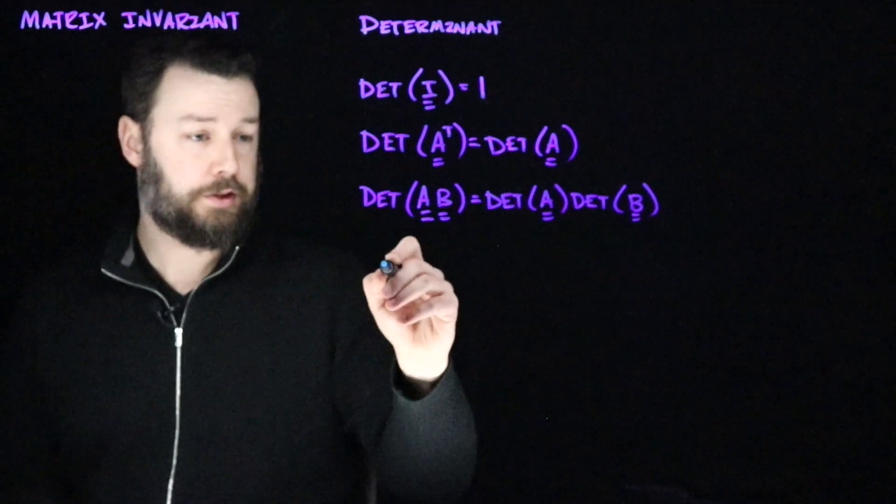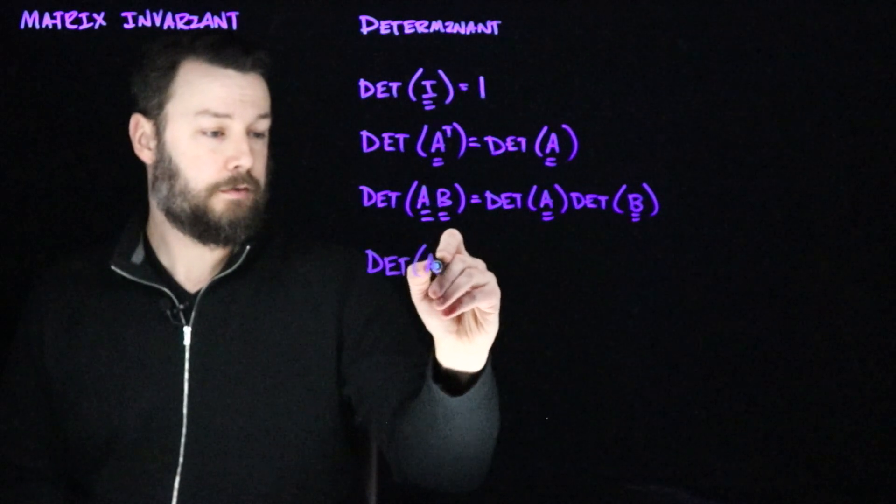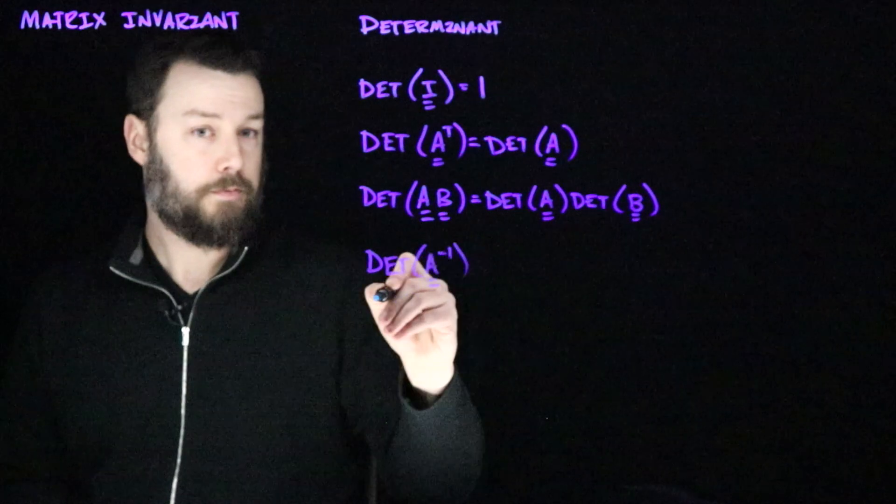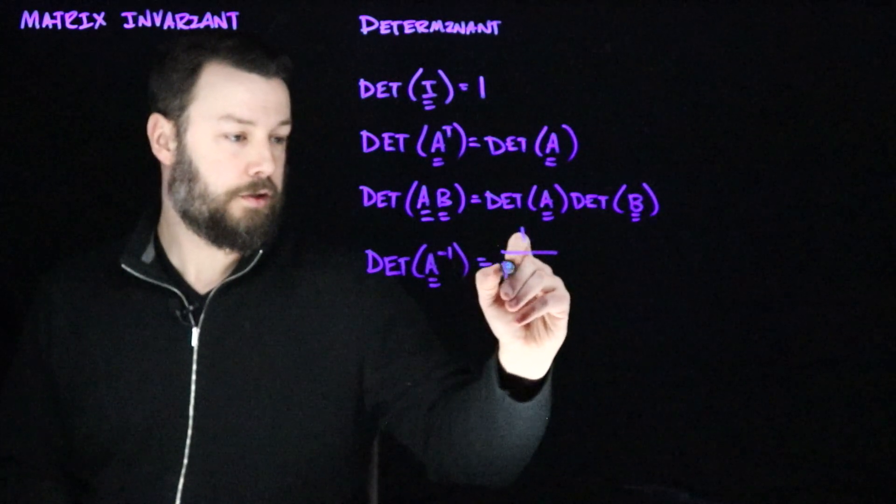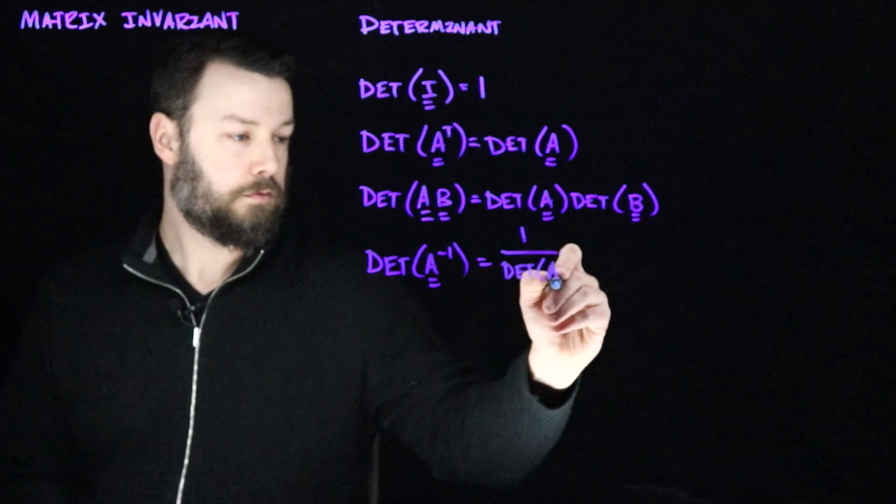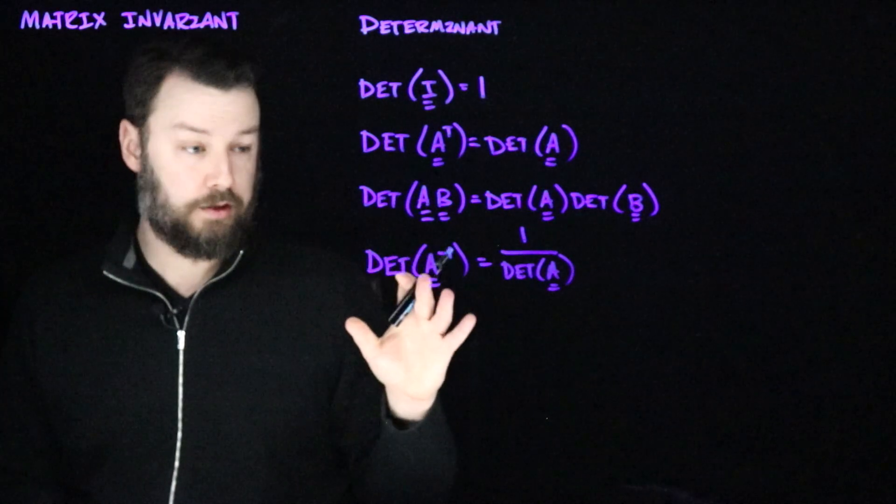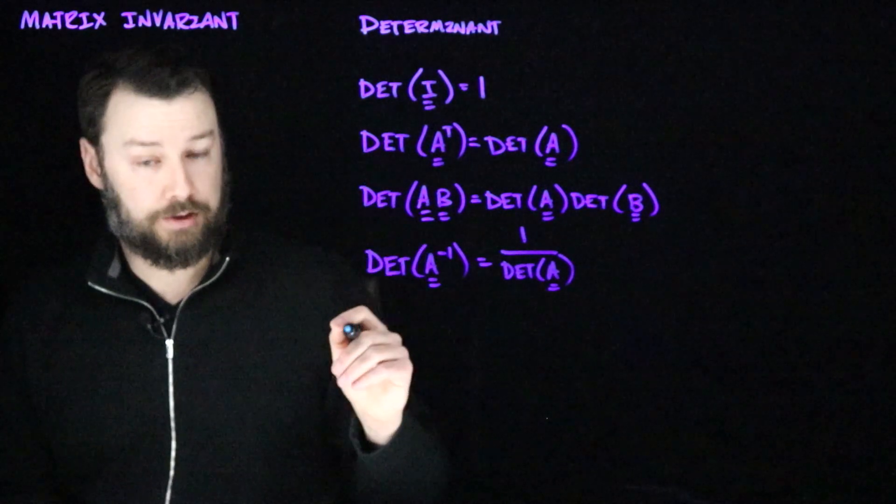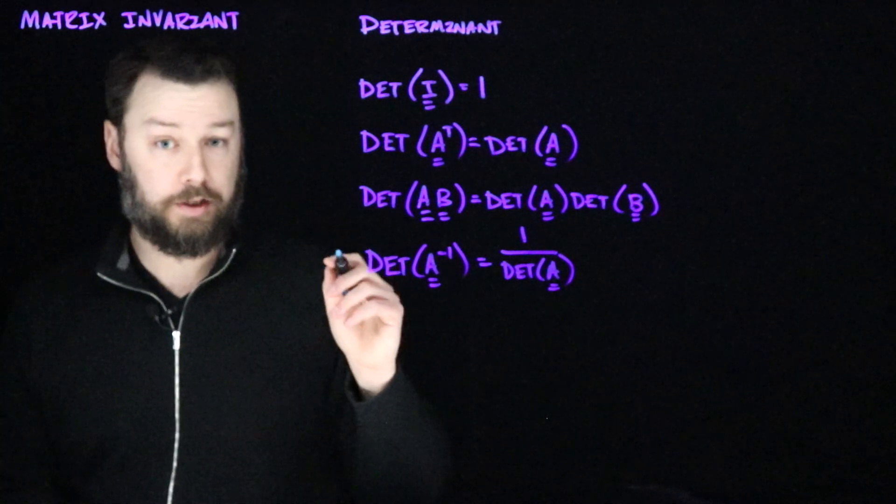If I have an invertible matrix A, the determinant of the inverse of A is equal to the reciprocal of the determinant of A. This is really important because it reveals something that we need to know, which is that singular matrices, that is matrices that do not have an inverse, have a determinant of zero.